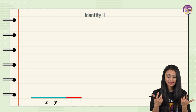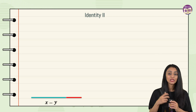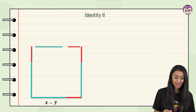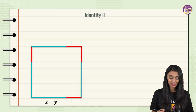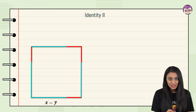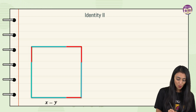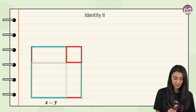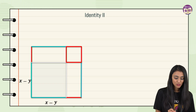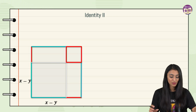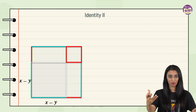We now have a square with side x − y and we need to find its area. The area of a square is side squared, which is (x − y)². After joining the points, this side is also x − y. The area of this smaller square is (x − y)².